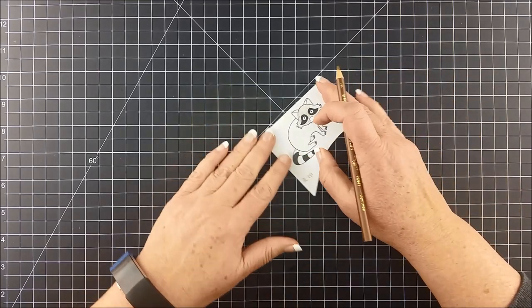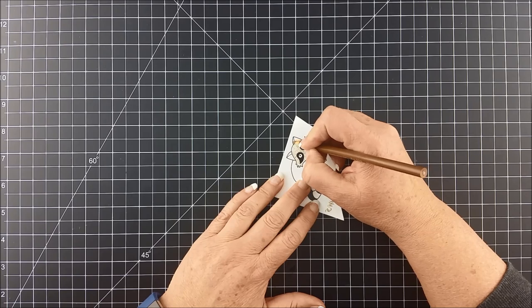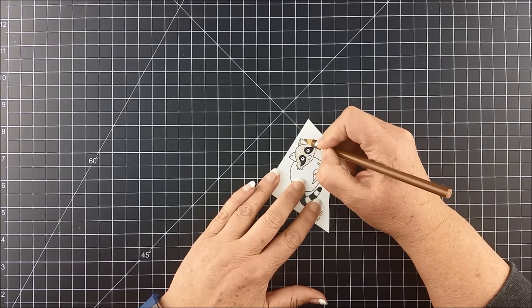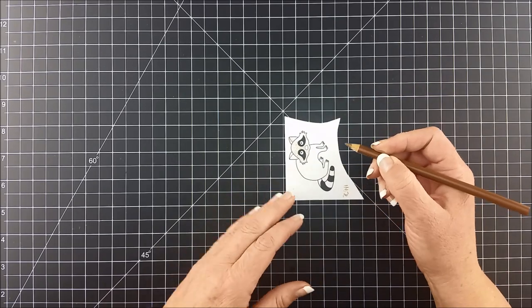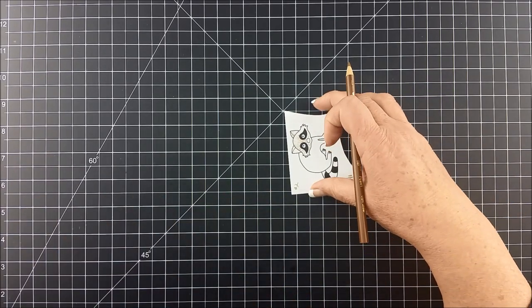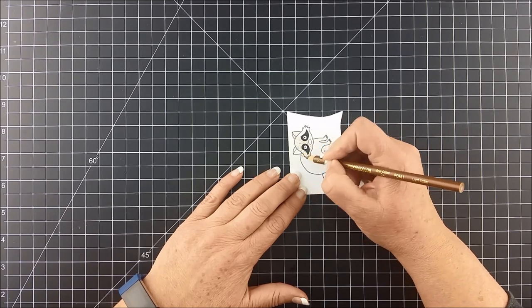Once you're done with the face, I moved on to the ears. I did little flicks up from the bottom of his ears and out from the center of his ears, so you're going to want to do that.